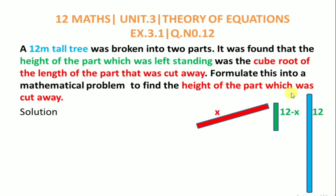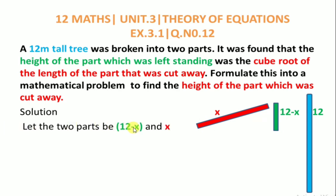A 12 meter height tree is broken into two parts. Let the cut away part be x. Total length is 12, so the remaining standing part is 12 minus x. Let the two parts be 12 minus x and x, where 12 minus x is the standing part height and x is the cut away part height.